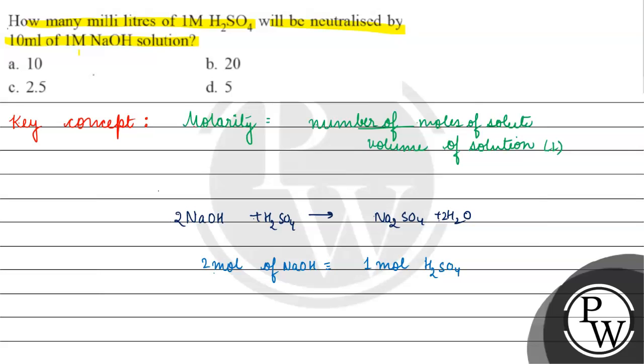Now if we talk about this, how many millimoles will happen in NaOH? Number of millimoles of NaOH, how many millimoles will happen? 10ml into 1 molar. How many millimoles will happen? 10 millimoles.